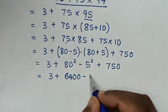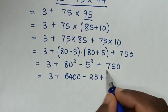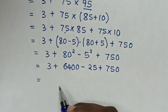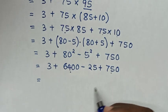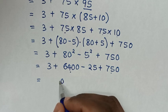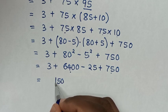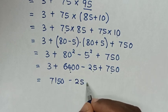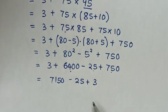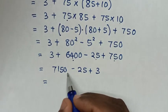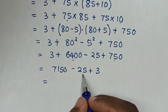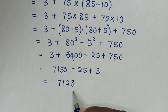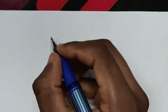Minus 5 squared is 25, plus 750. Then: 6,400 plus 750 is 7,150, then minus 25, then plus 3. So in the next step: 7,150 minus 25 is 7,125, plus 3 is 7,128. Therefore this is our final answer.